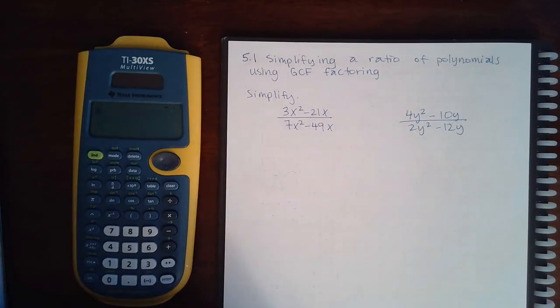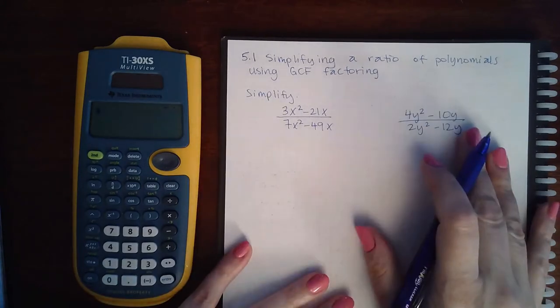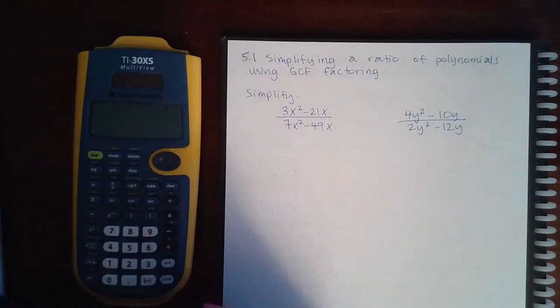Here we have 5.1, simplifying a ratio of polynomials using GCF factoring. These expressions are not factored for me, so I will have to factor them first before I can simplify.